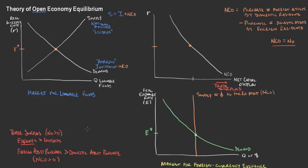We can also think about the exact opposite — a trade deficit, where net exports are less than zero, meaning imports are greater than exports. We are purchasing a lot of goods made in other countries, and we are giving those countries our dollars. Those foreign residents are now holding a lot of our dollars. This negative portion increases relative to the positive portion, so in the case of a trade deficit, our net capital outflow is less than zero — it becomes more negative because of the imports we are purchasing.